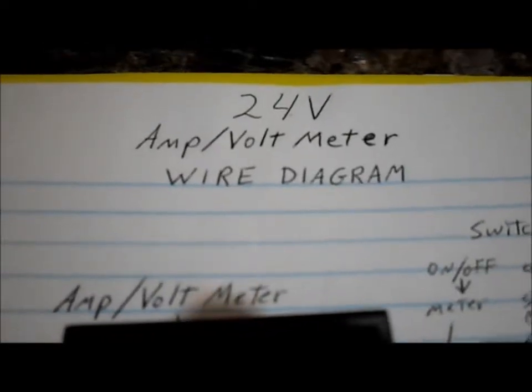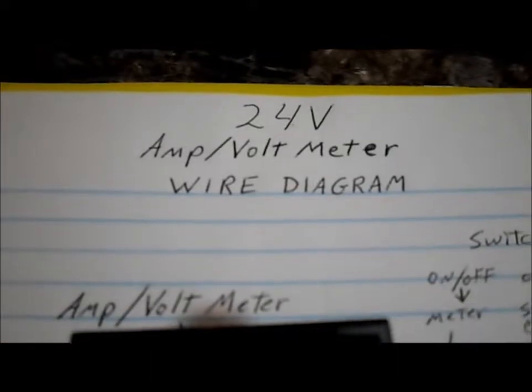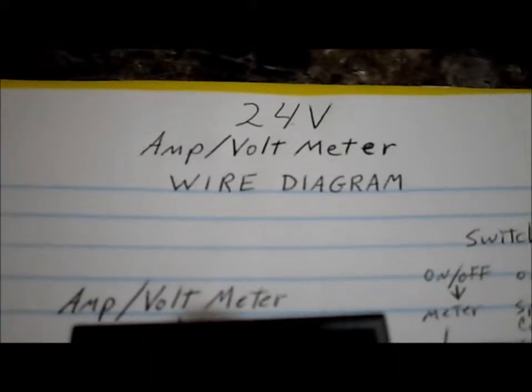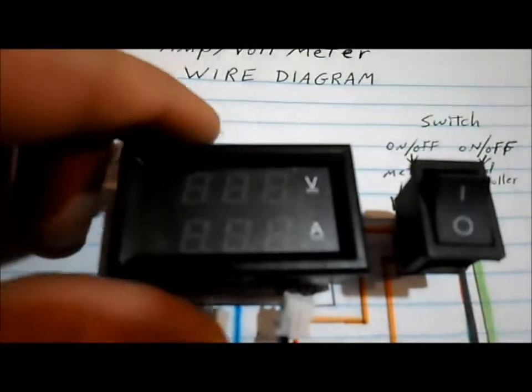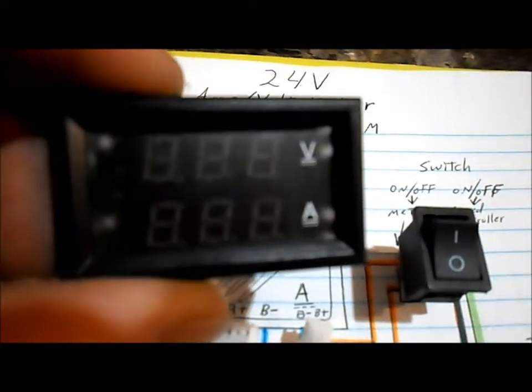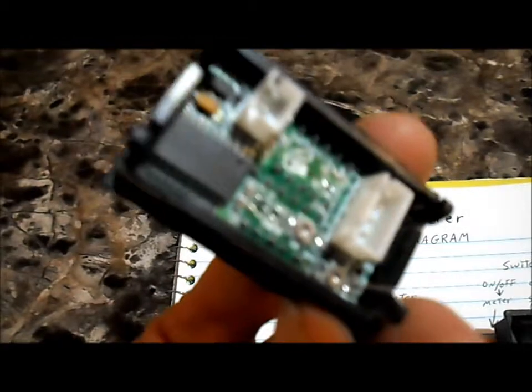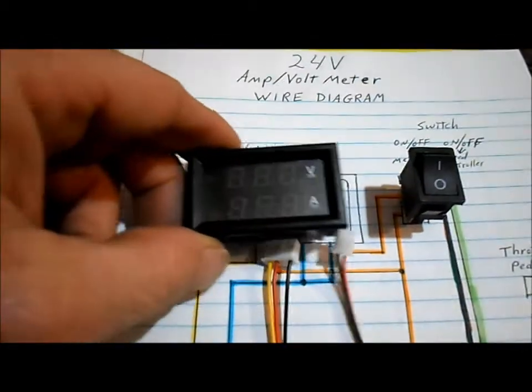Today we are going to hook up a volt amp meter to a 24 volt setup. A volt amp meter is one of these little fellas. It's a digital readout that shows the volts and amps.